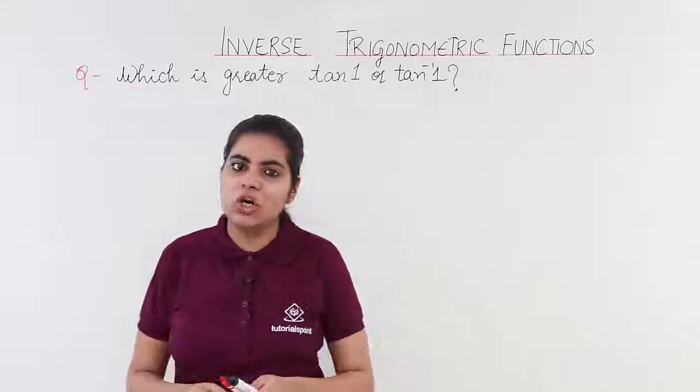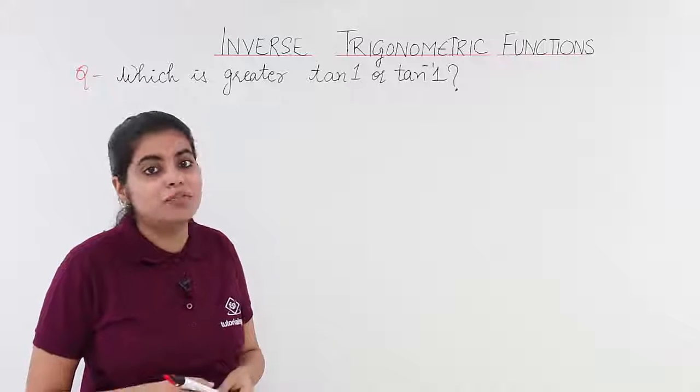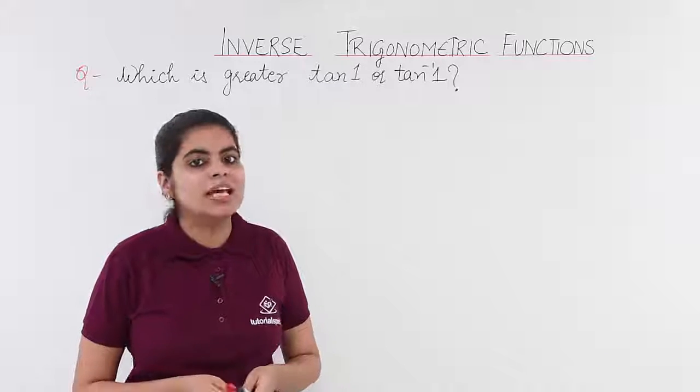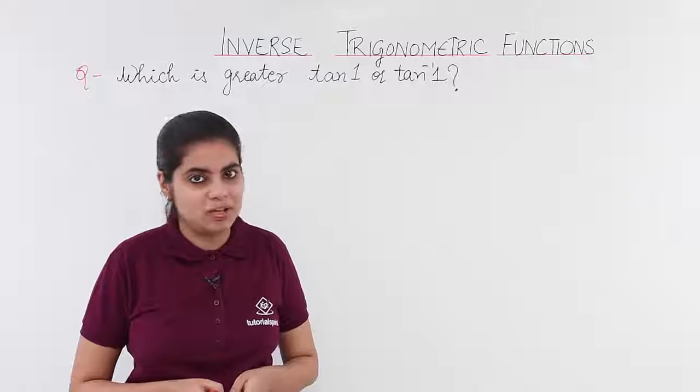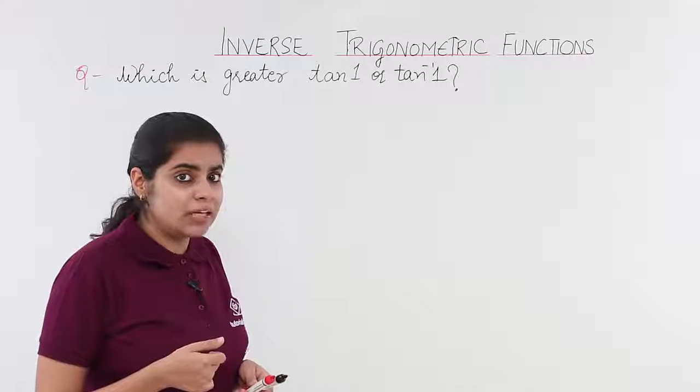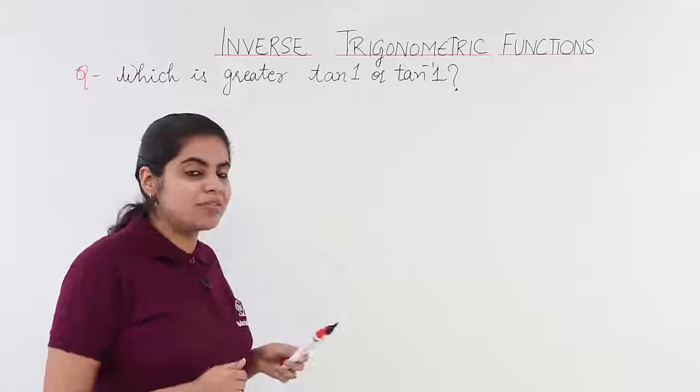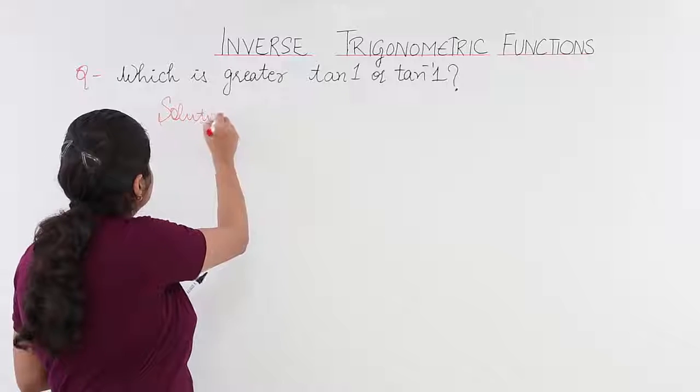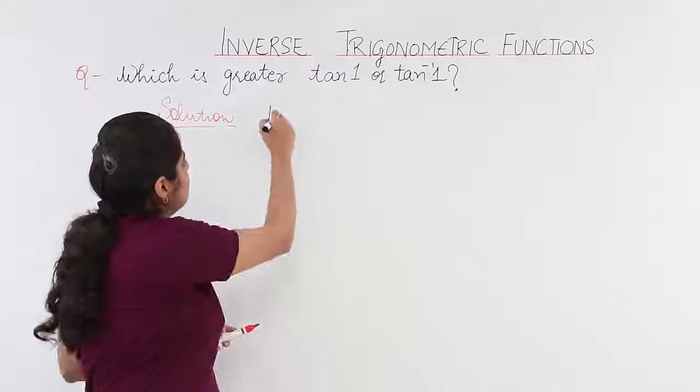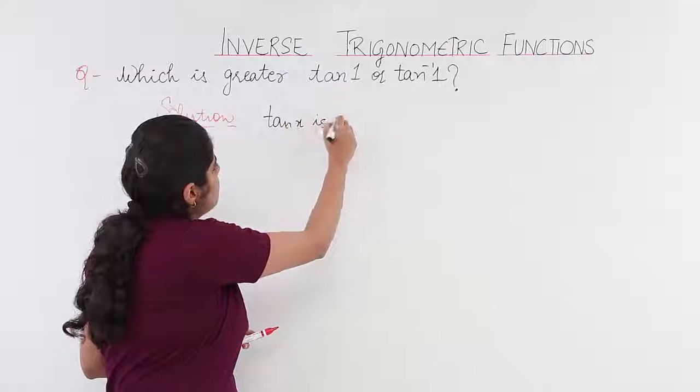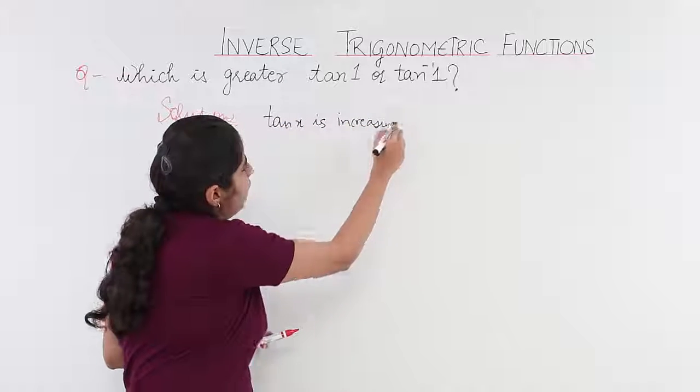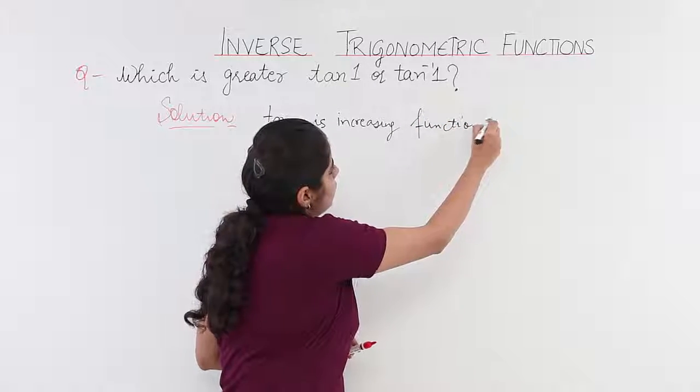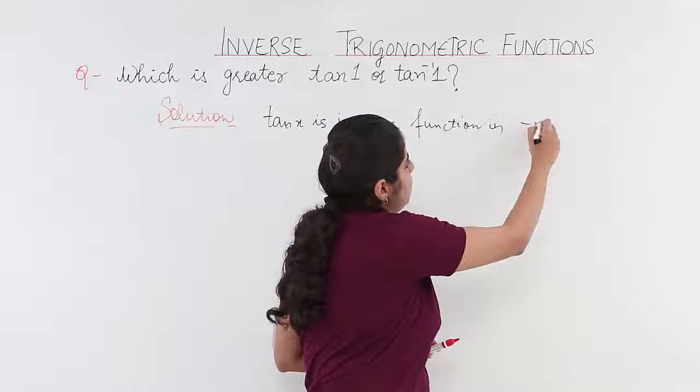Now, with the knowledge of the graph of tan x, we already know that tan x is an increasing function in the interval of minus pi by 2 to pi by 2. How do we know that? Because we already studied the graph and let's check with the values also. So, let me write down solution. I already know that tan x is increasing in the interval of minus pi by 2 to pi by 2.